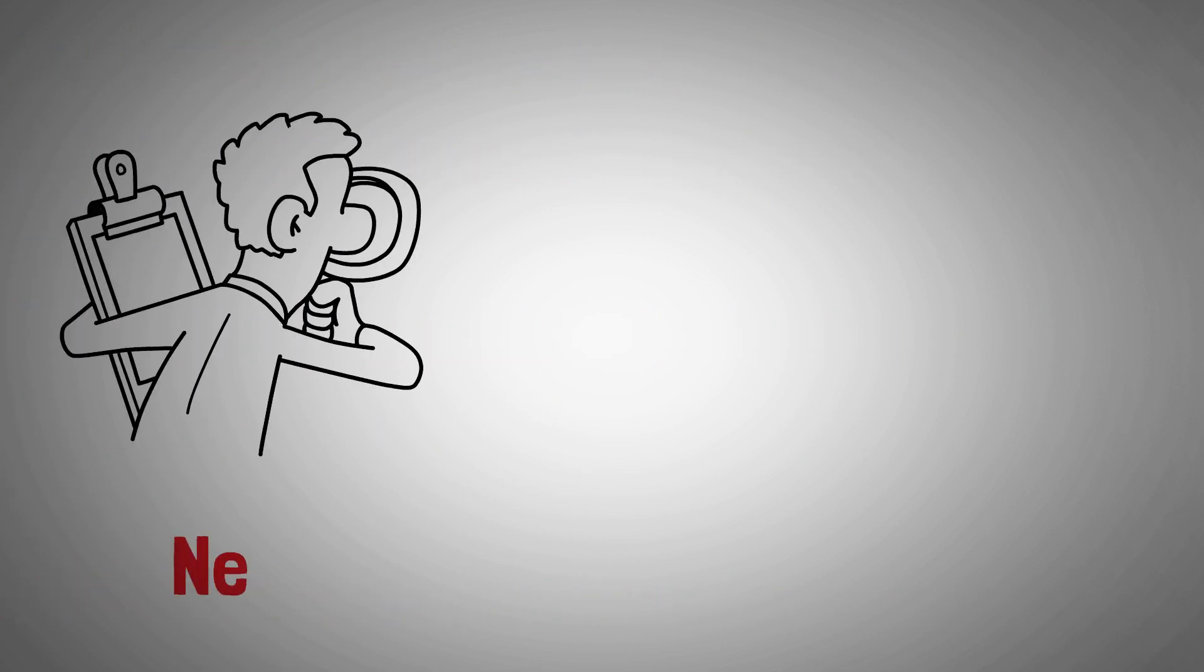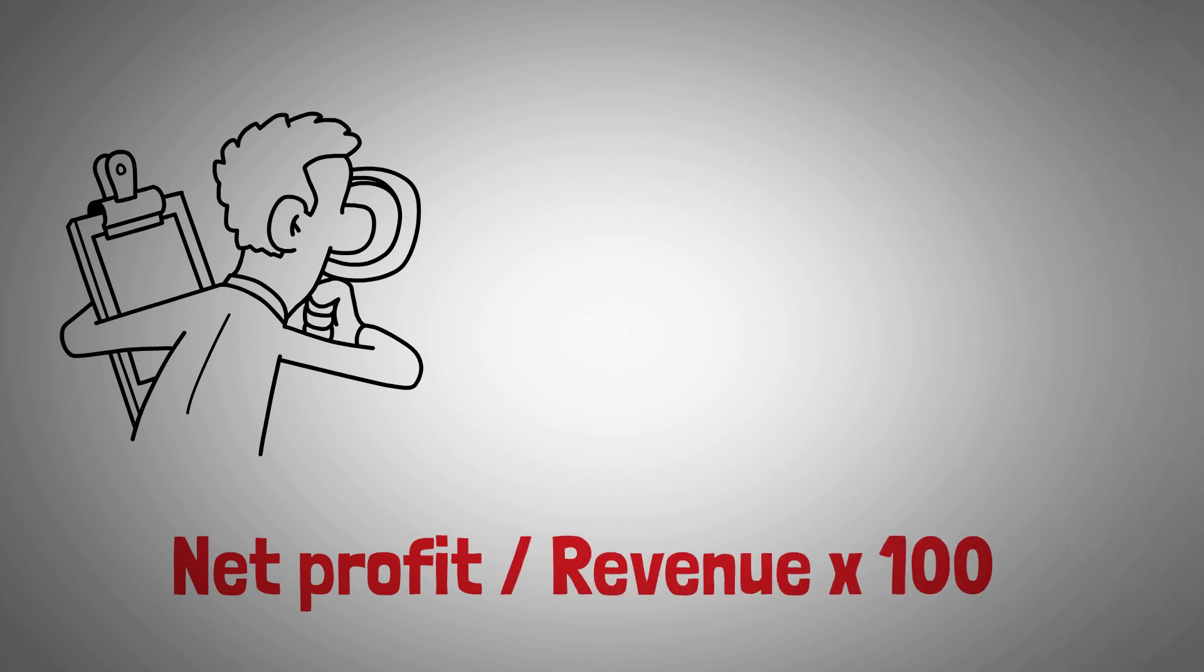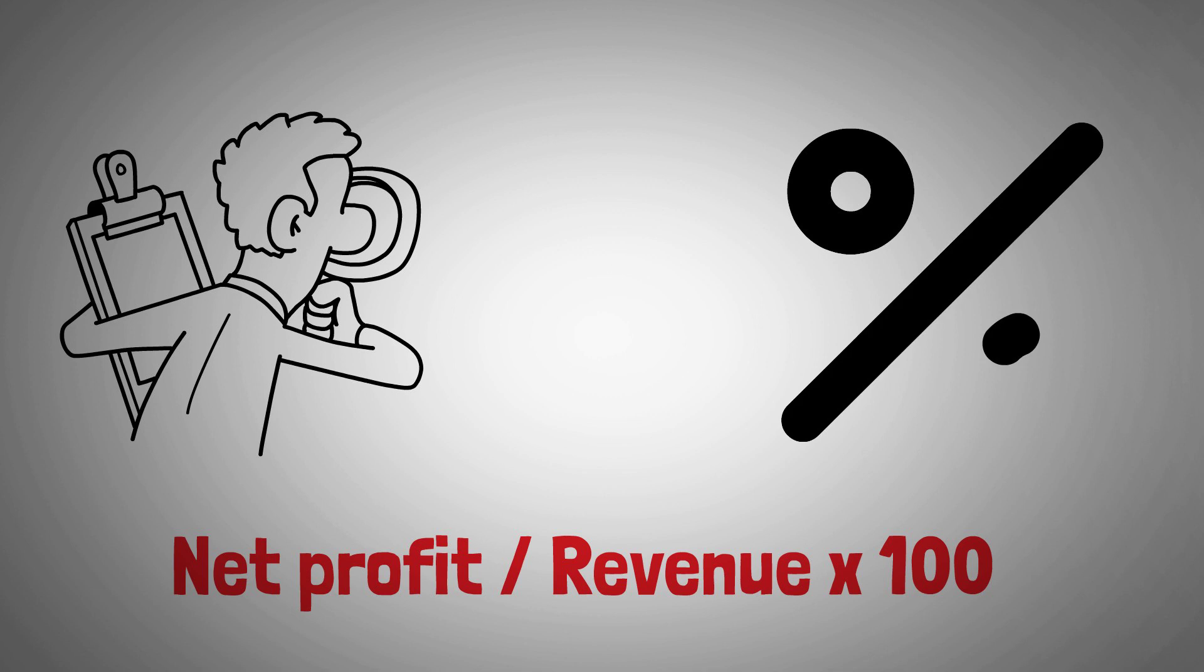Once you have these figures, you can calculate the profit margin by dividing the net profit by the total revenue and then multiplying it by 100. This will give you the profit margin as a percentage.